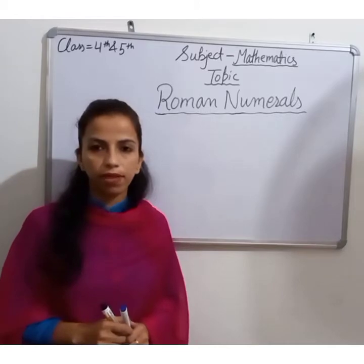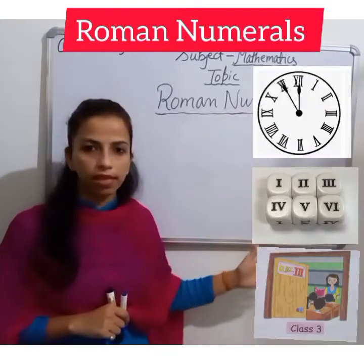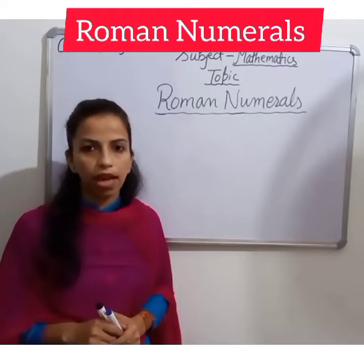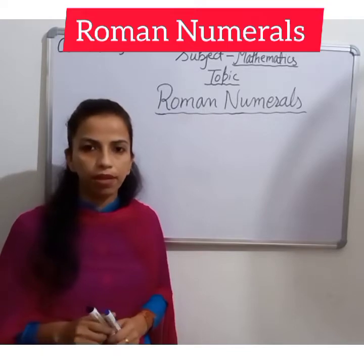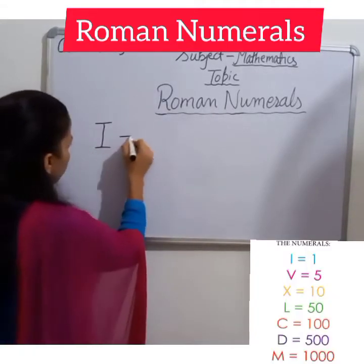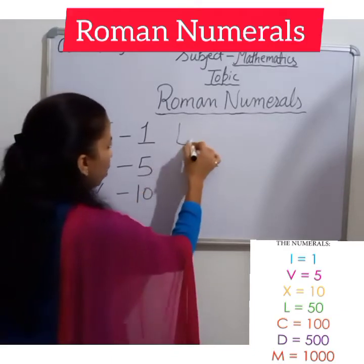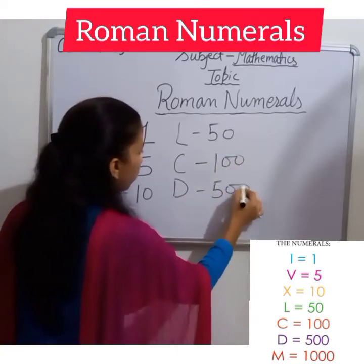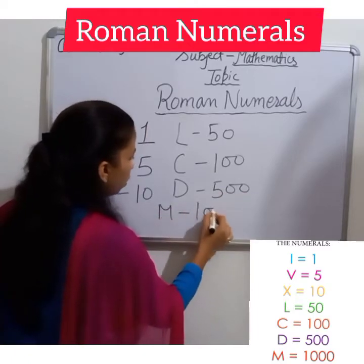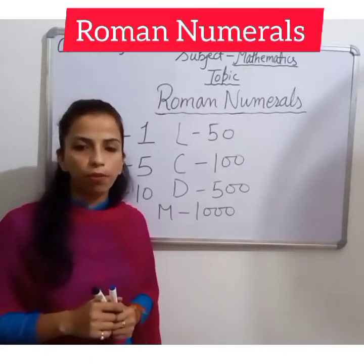Hello everyone, dear students. In this video we are going to learn about Roman numerals. Have you ever noticed these symbols? What do these symbols represent and how are they different from numbers we use? Well, these are Roman numerals. The Romans use seven English alphabets to represent numbers. These are: I for one, V for five, X for ten, L for fifty, C for hundred, D for five hundred, M for thousand.